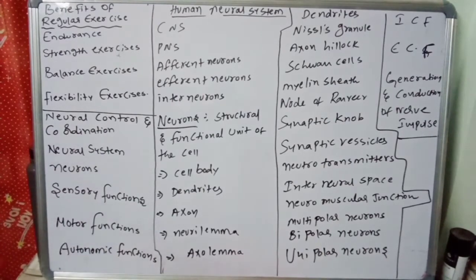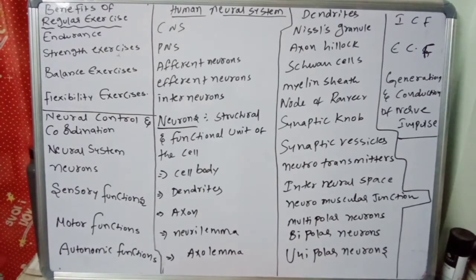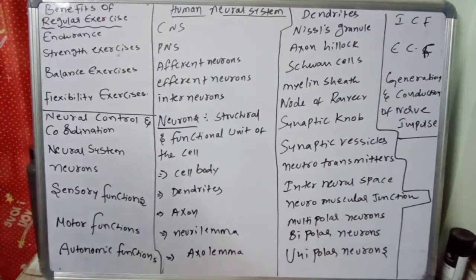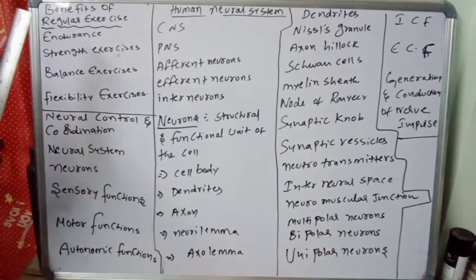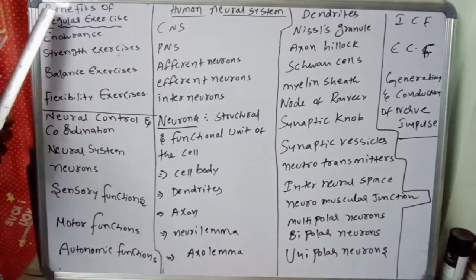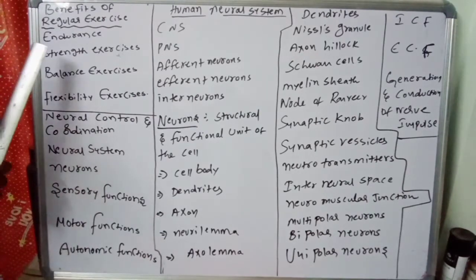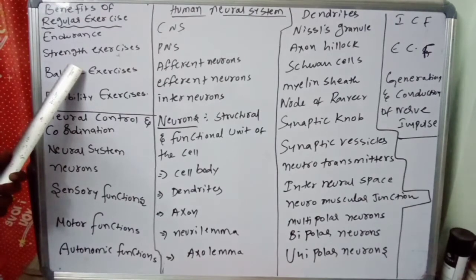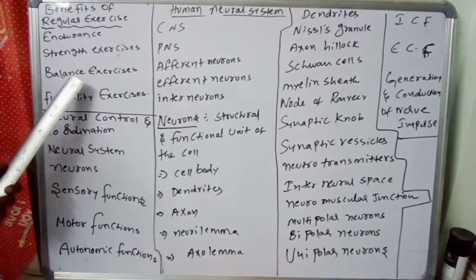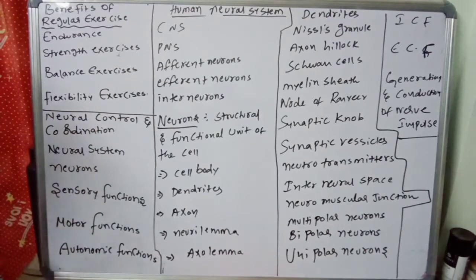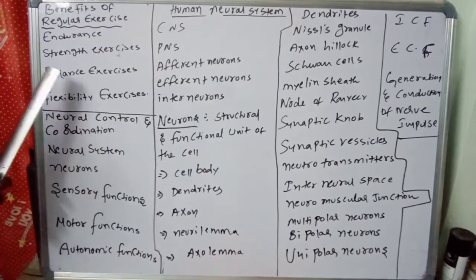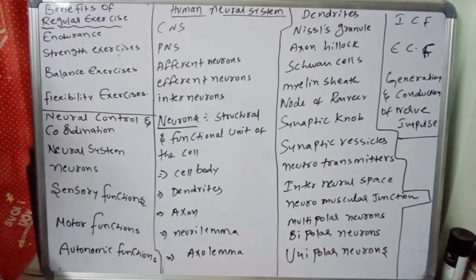The first important topic is the benefits and types of exercises. Exercise and physical activity fall into four basic categories: endurance, strength exercises, balance exercises, and flexibility exercises.